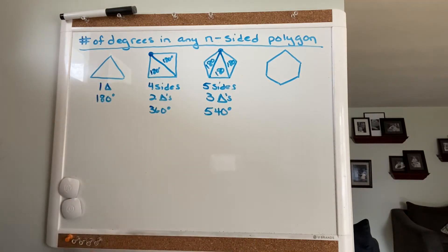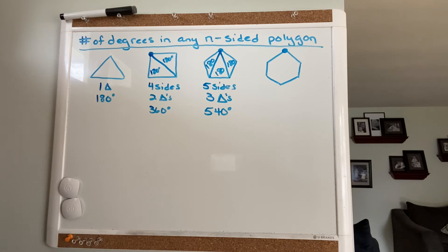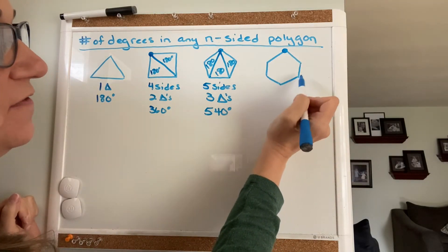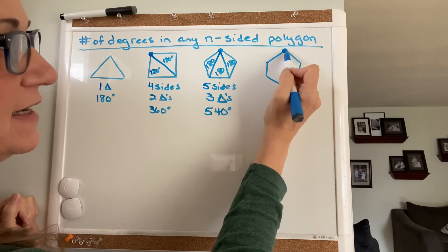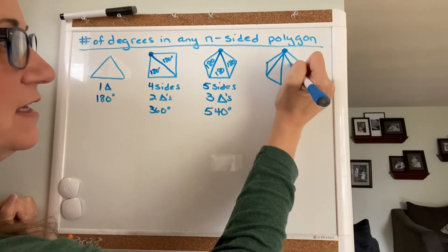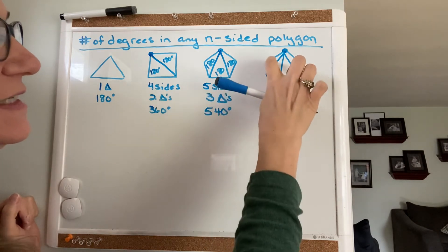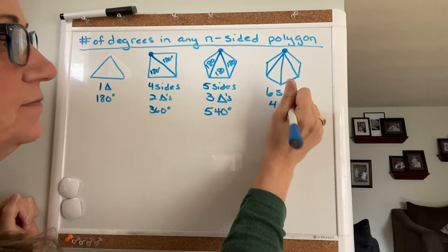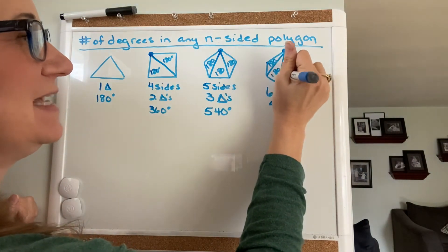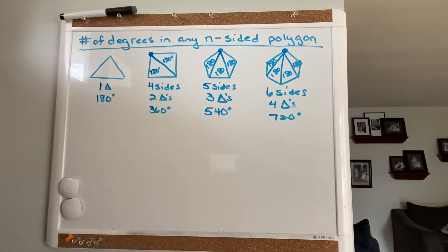I'm doing this so we can create a pattern to help derive the formula. For the hexagon, I take one vertex — it doesn't matter which one — and connect it to the other five vertices. Two pairs are already connected, so I draw segments connecting the remaining three pairs. Every hexagon has six sides. Connecting one vertex to the others creates four triangles, and 180 times four is 720 degrees. So every hexagon contains 720 degrees.